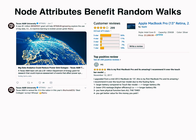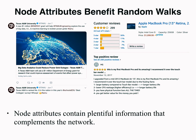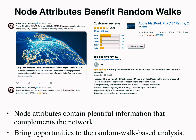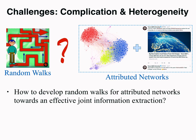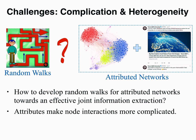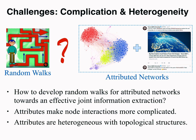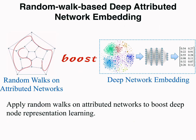Nodes have different characteristics, described by the rich set of data associated with them. These node attributes contain plentiful information that often complements the network, and brings opportunities to the random walk-based analysis. However, it is unclear how random walks could be developed for attributed networks towards an effective joint information extraction. Node attributes make node interactions more complicated, and are heterogeneous with respect to the topological structures. To bridge the gap, we explore applying random walks on attributed networks to boost deep node representation learning.